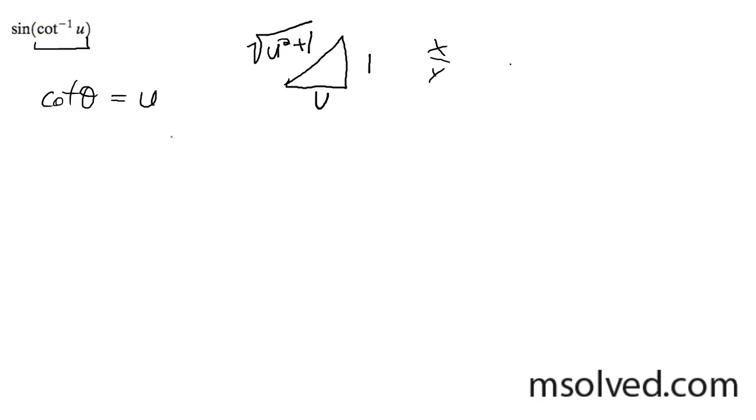But I can take the sine of this now. So the sine of this is going to be the opposite over the hypotenuse, which in this case is 1 over the square root of u squared plus 1. So there's our final answer.